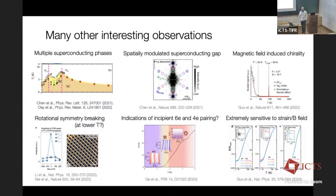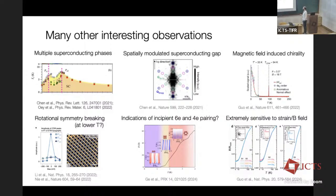Perhaps most exotically, oscillations in the magnetoresistance give some evidence of half and third flux quantization, suggesting condensation of quadruplets or sextuplets of electrons. The materials also at some temperature quite a bit lower than the CDW transition exhibit extreme sensitivity to magnetic field and strain, where slight strain fields or magnetic fields result in a very strong response with anisotropic transport or chiral transport — an anisotropic resistance depending on the direction of the magnetic field.